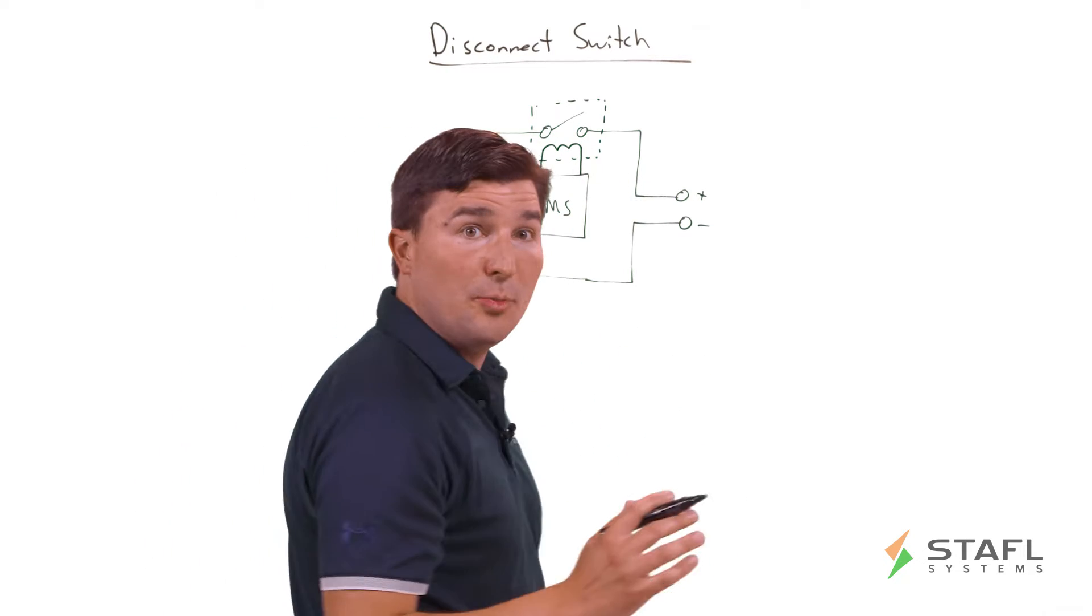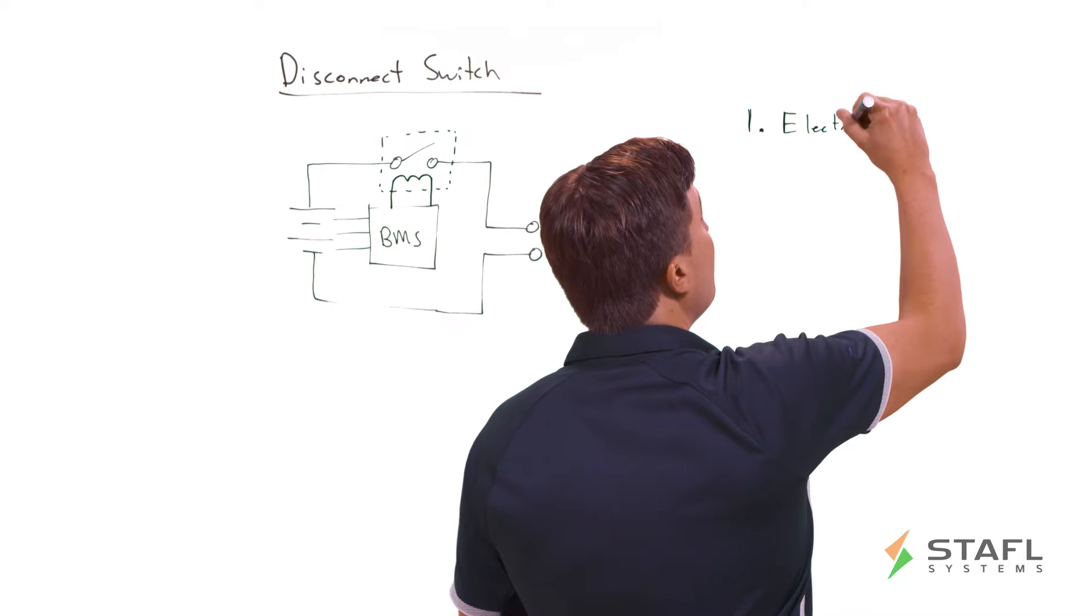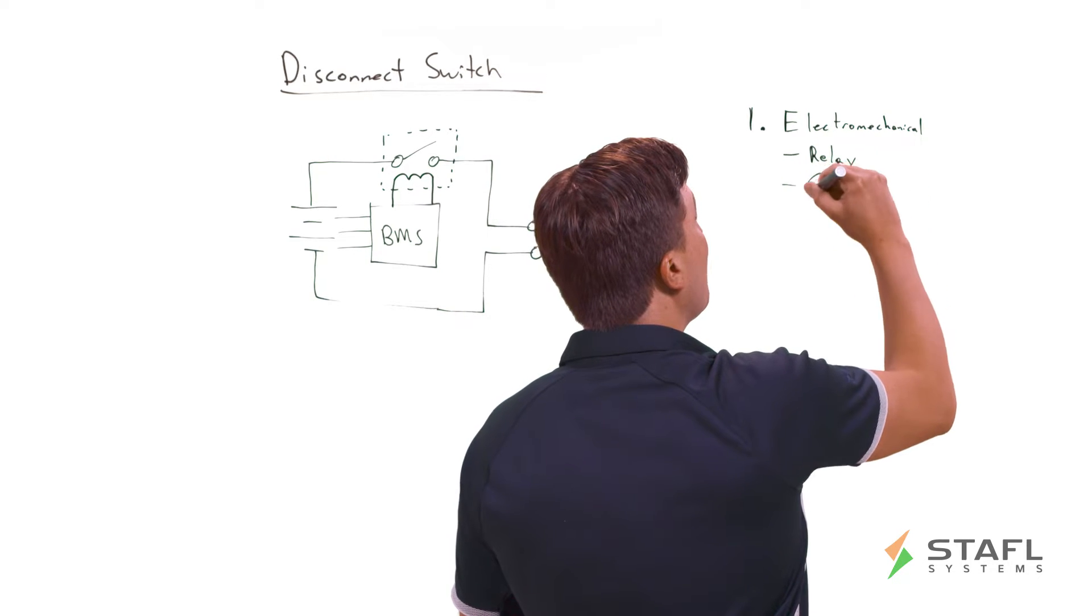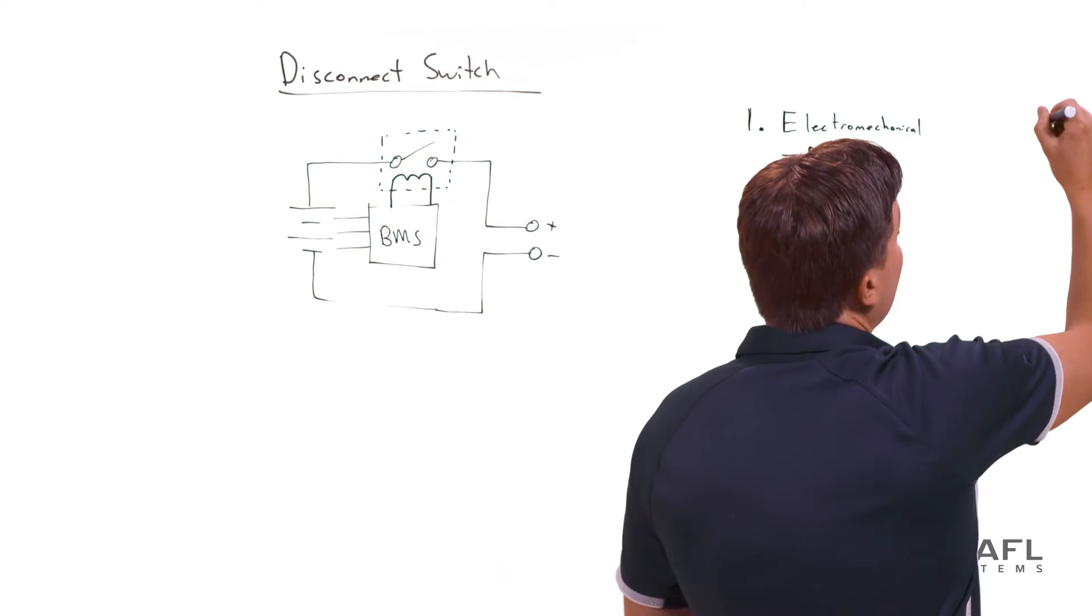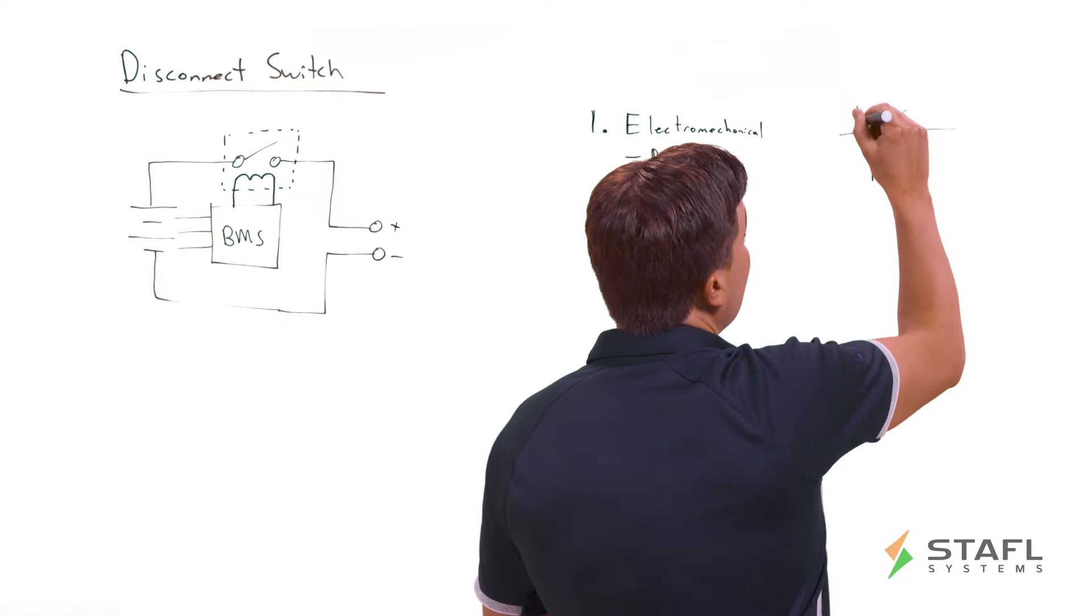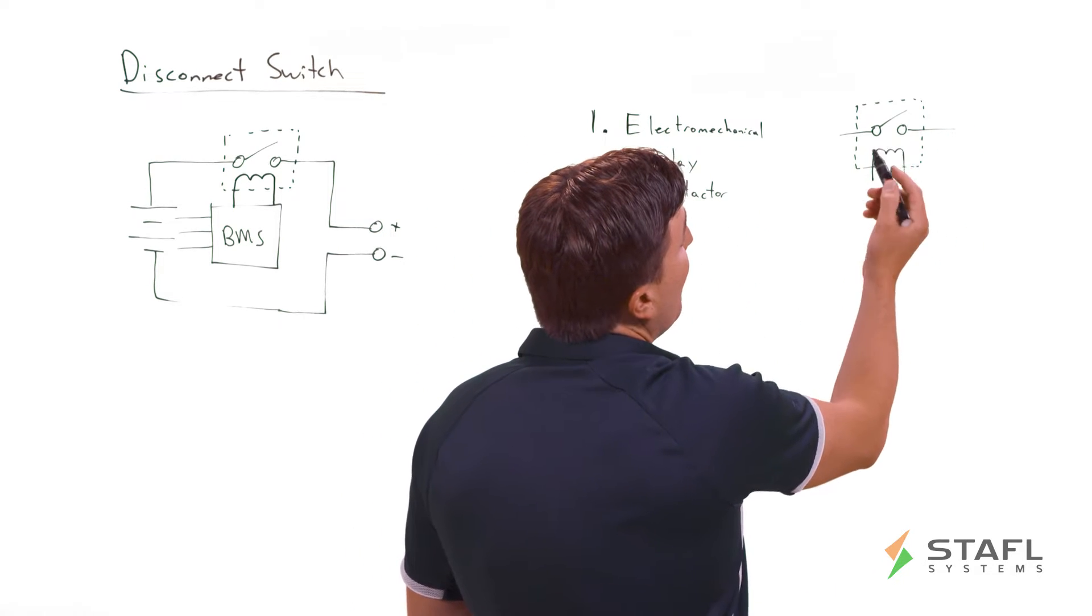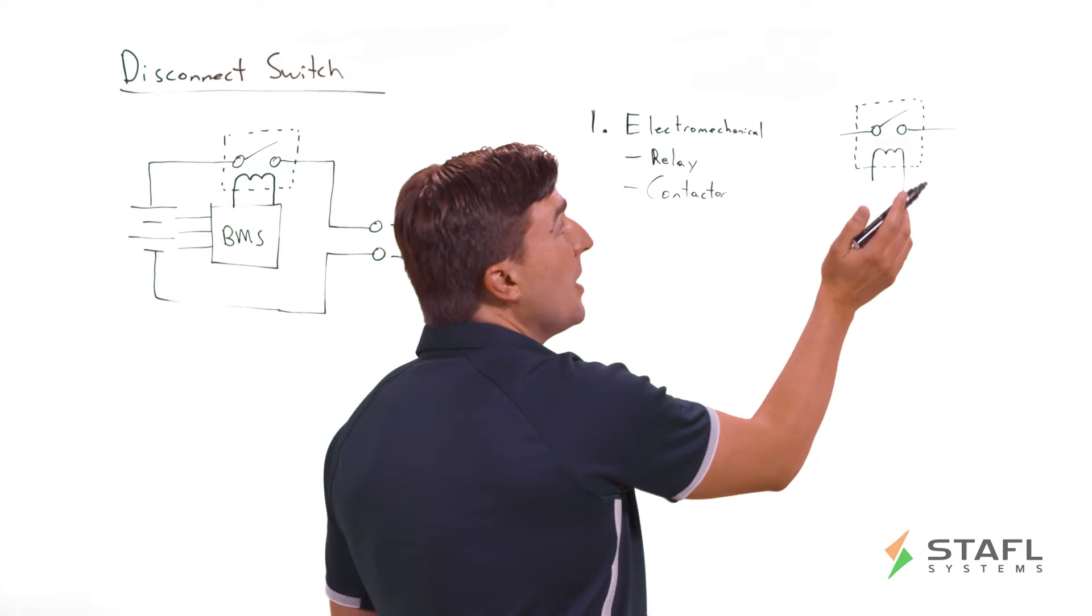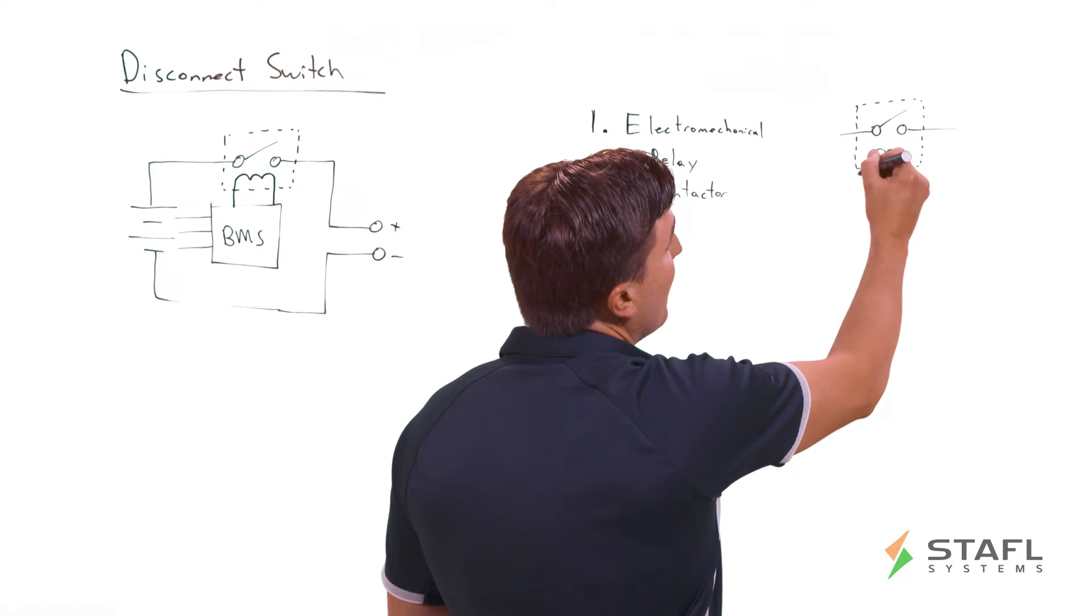Let's discuss the two primary types of disconnect switches. The first is electromechanical. This could be a relay or another term is a contactor. Diagrammatically, a contactor has two high current contacts and then an electrically isolated coil, which can determine whether this switch is closed or open. Closed would be for current flowing and open would be to interrupt all the current flow.